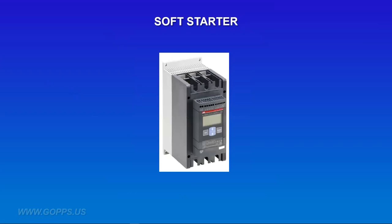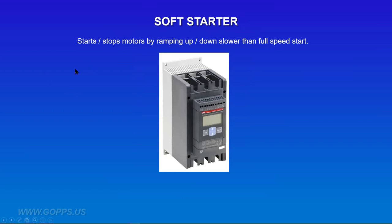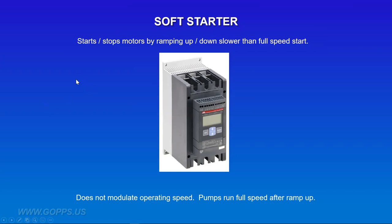A soft starter is a device that starts and stops a pump by ramping it up and down slower than full speed. If pressure drops in the main line, the pump ramps up slowly, and when pressure reaches a certain point, it ramps down slowly. This is easier on the pump and on pipes and fittings in the field. However, a soft starter does not modulate operating speed — once it ramps up to full speed, it continues at full speed. The only other operational option is that when pressure reaches a certain point, it ramps back down and stops.